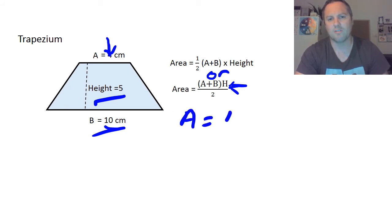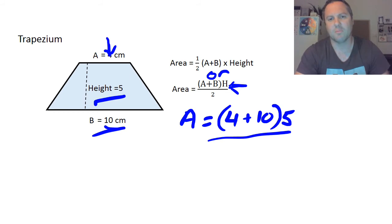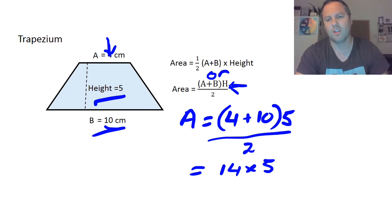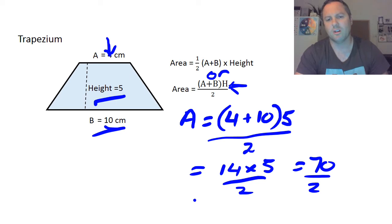Using that rule: A equals (4 + 10) times height, which is 5, divided by 2. We put brackets around 4 + 10 because of BODMAS. So 4 + 10 is 14, times 5 equals 70, then divided by 2 gives us 35 centimeters squared.